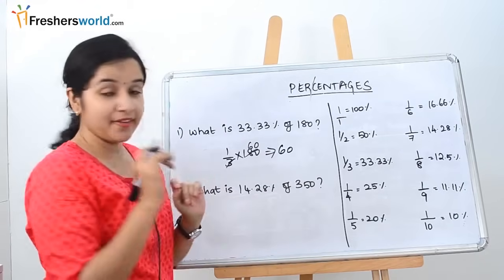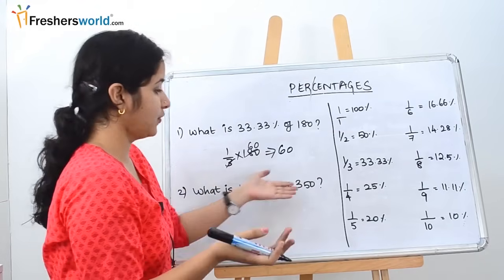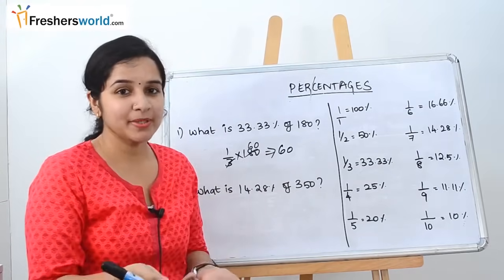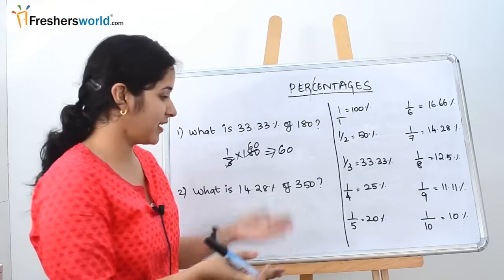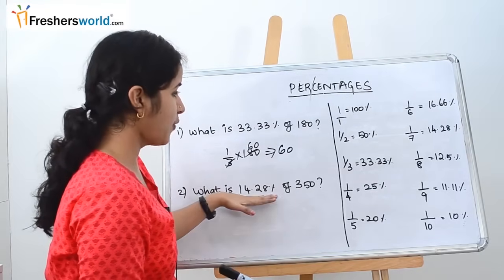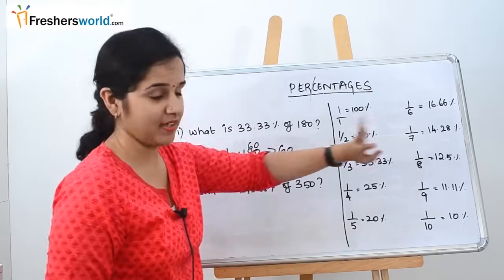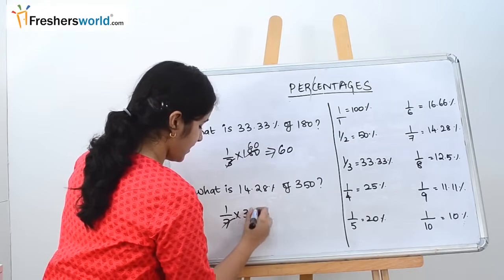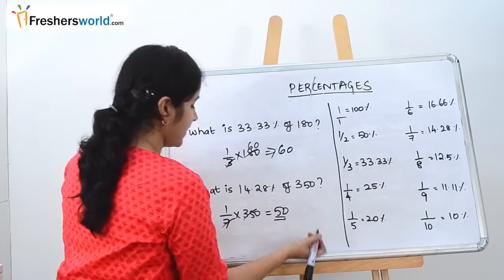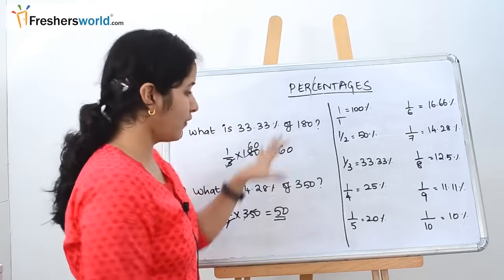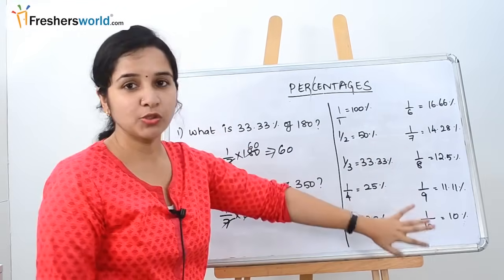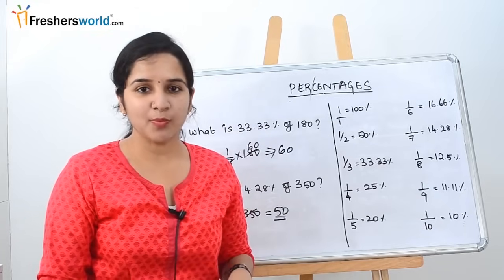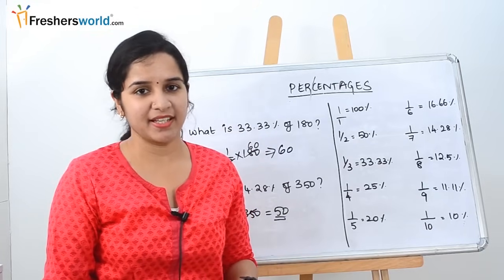Let's solve another problem. What is 14.28% of 350? Instead of the elaborate method of 14.28 ÷ 100 × 350, you know that 14.28% = 1/7. So directly: 1/7 × 350 = 50. This is the main reason for knowing these fractions. If you remember them, most percentage problems can be solved within 5–6 seconds.